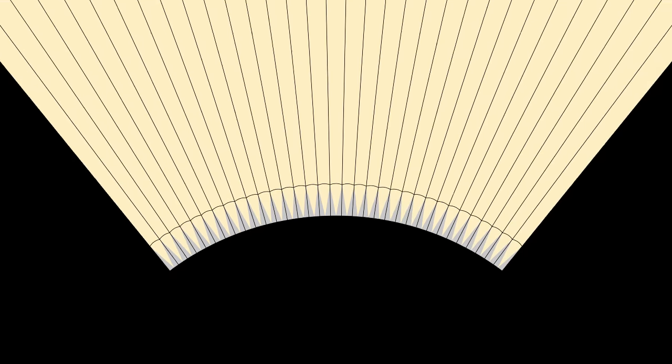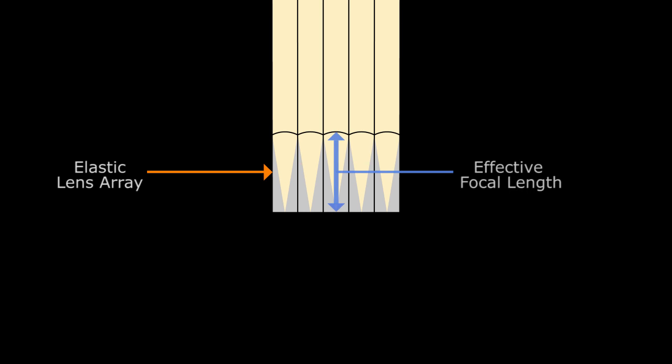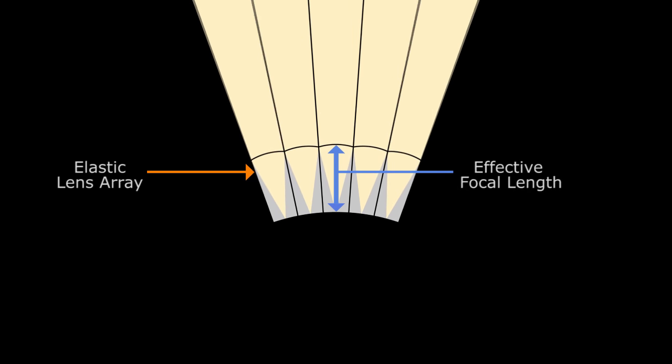To avoid the gaps in the field of view, we need a lens array where the focal length of each lens adapts to the local curvature of the array. It turns out that by using an elastic material, we can design an array where the effective focal length of each lens varies with curvature.